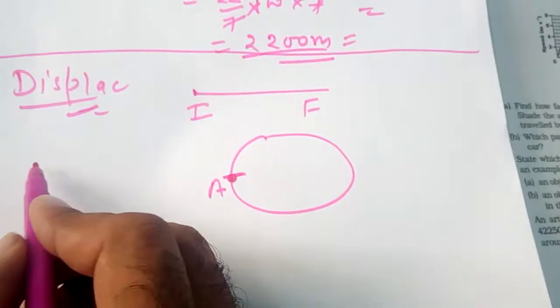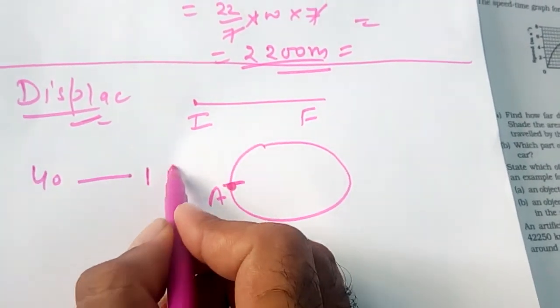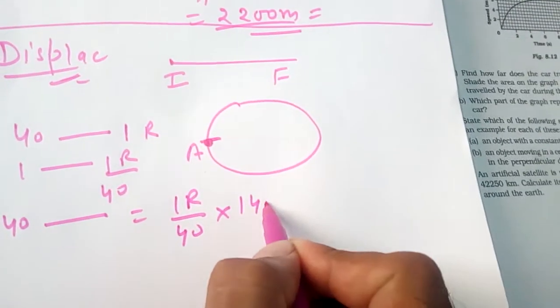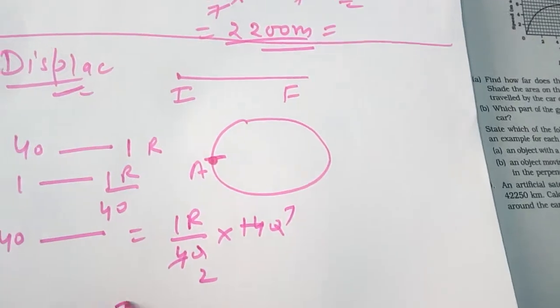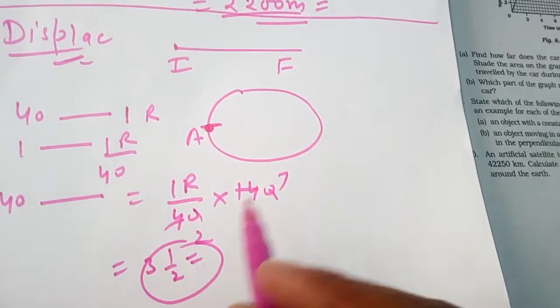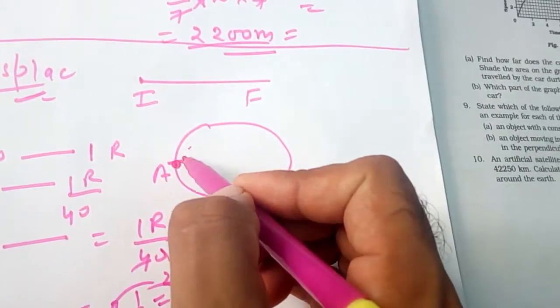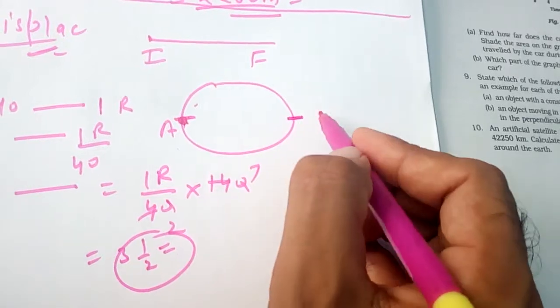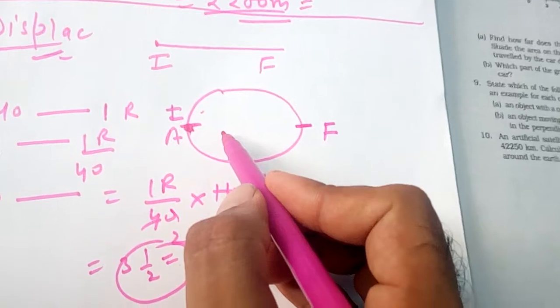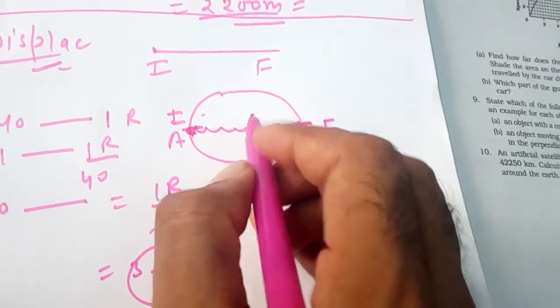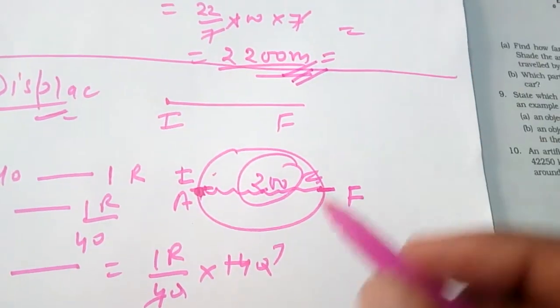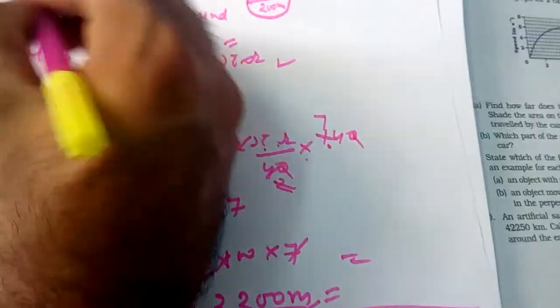In 40 seconds, 1 round. In 140 seconds: 1 round upon 40 into 140, cancel to get 3 and a half rounds. After 3 and a half rounds: 1st round back to start, 2nd round back, 3rd round back, half round reaches the opposite point. So the final point is diametrically opposite to the initial point. The displacement is 200 meters. First answer: 2200 meters; second answer: 200 meters.